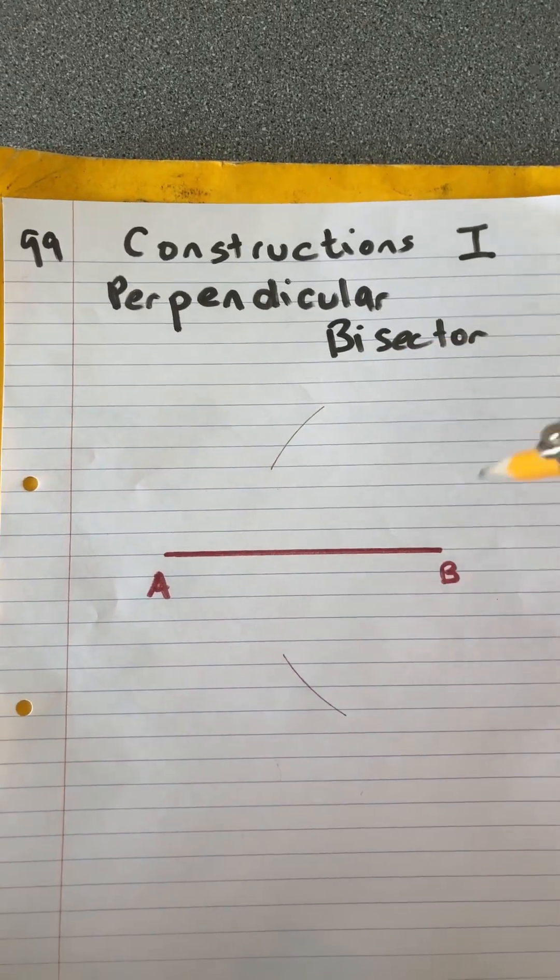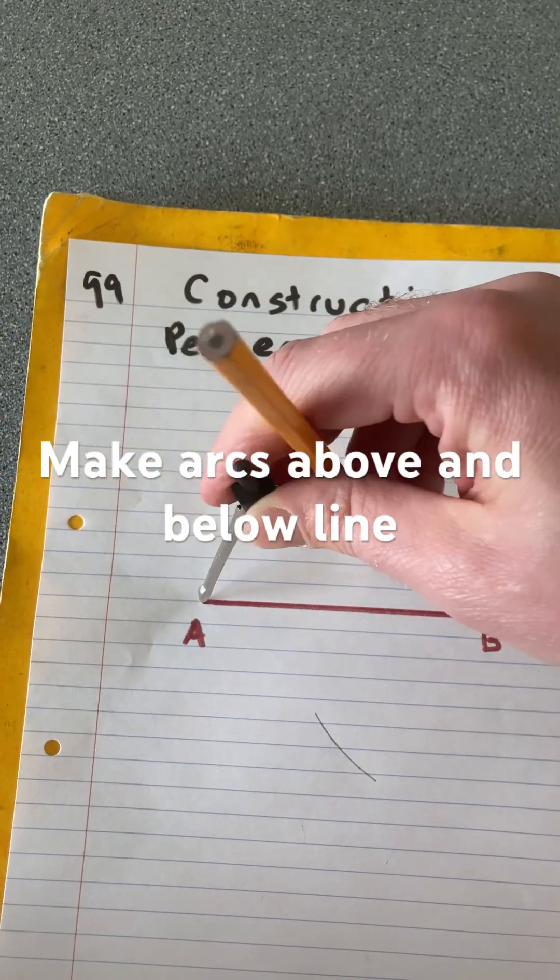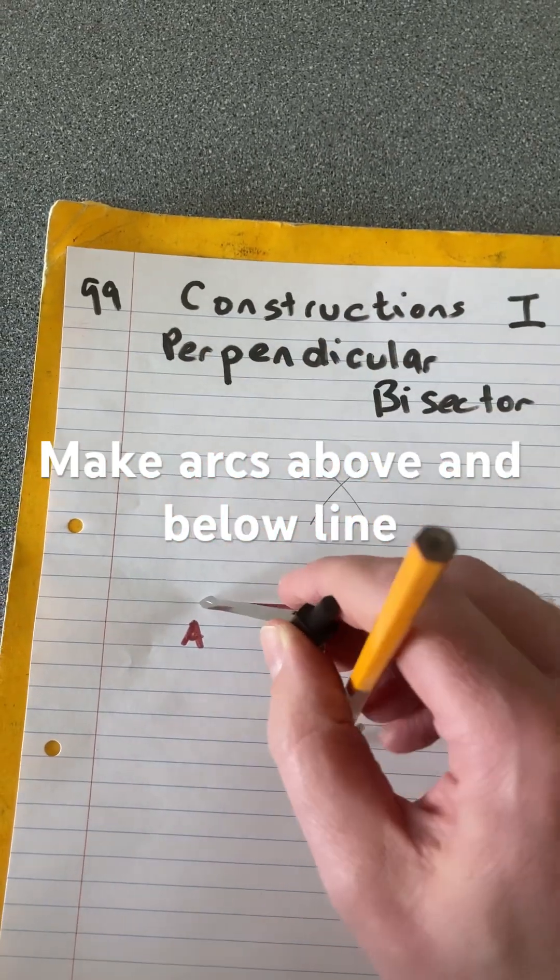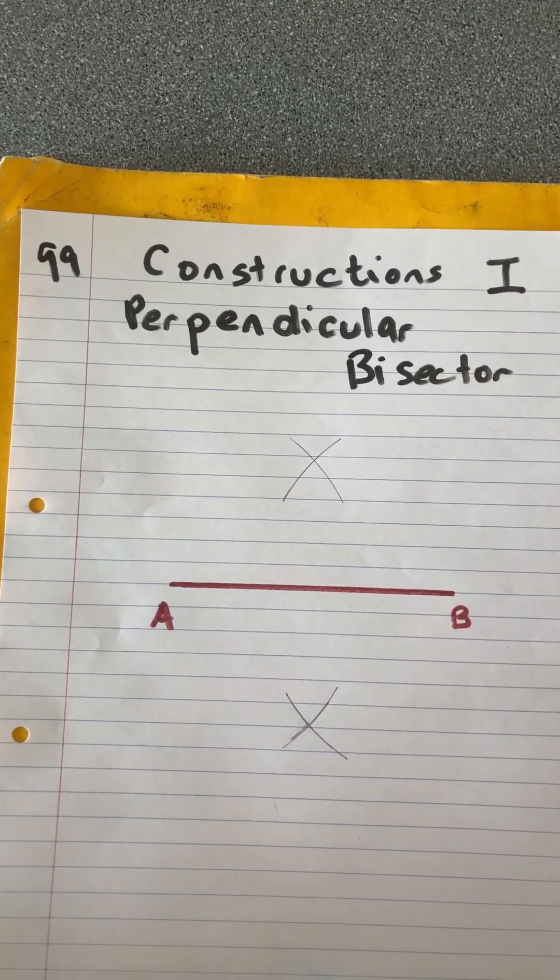What you now want to do is move to the other side. With A there, keeping the paper still, make marks above and below, and they should cross. If they don't, then you just need to make your arcs bigger.